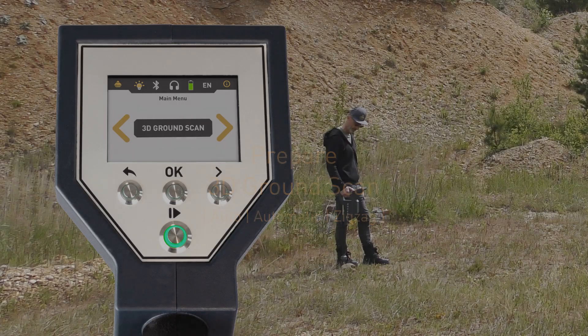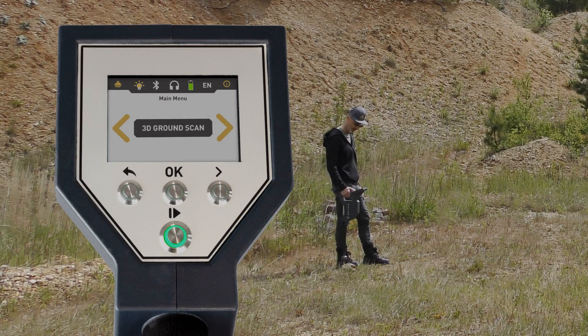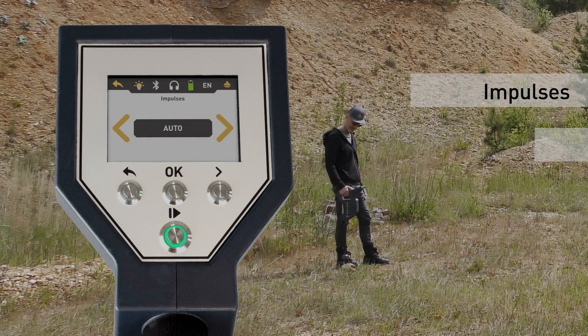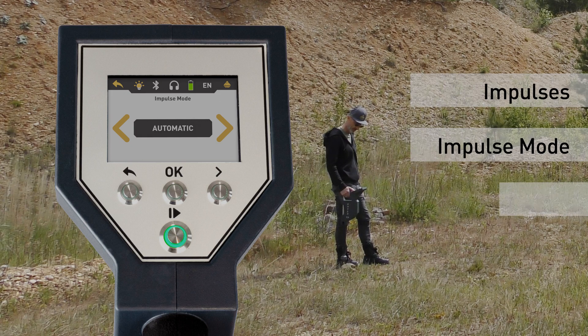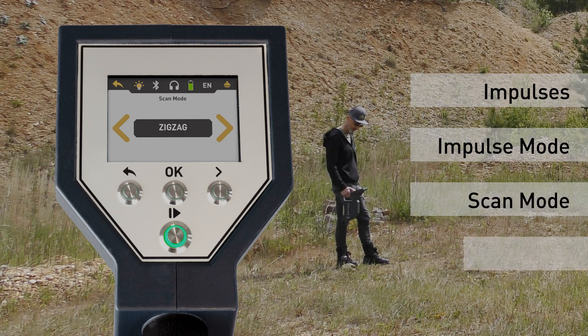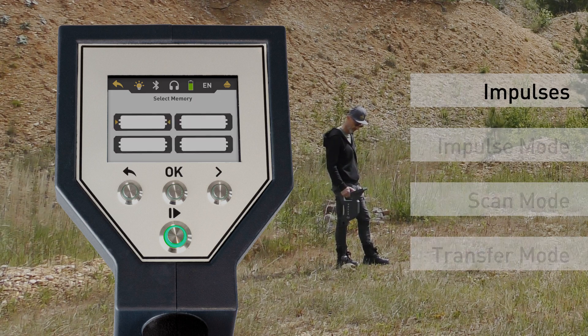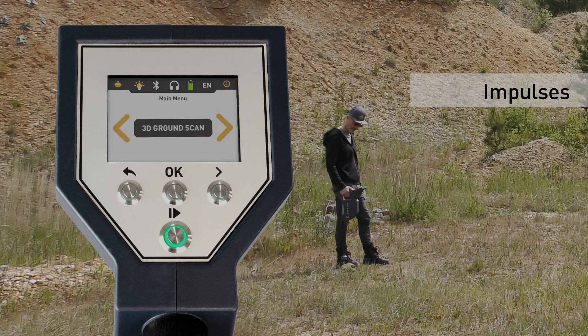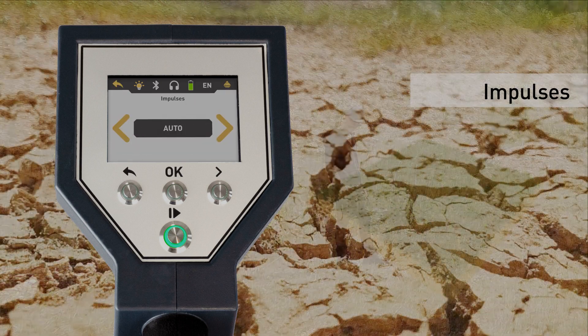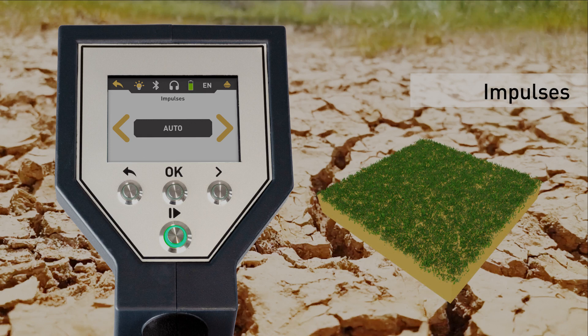Select 3D ground scan and adjust the parameters: Impulses, Impulse Mode, Scan Mode, and Transfer Mode. First, set the number of impulses. We recommend Auto.